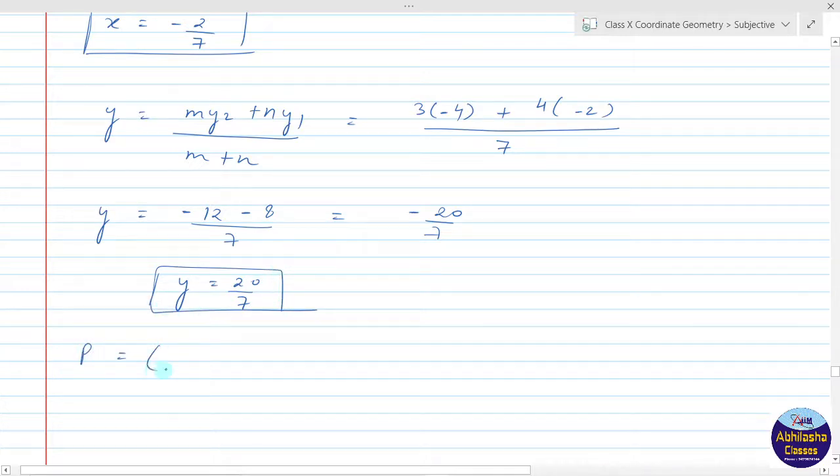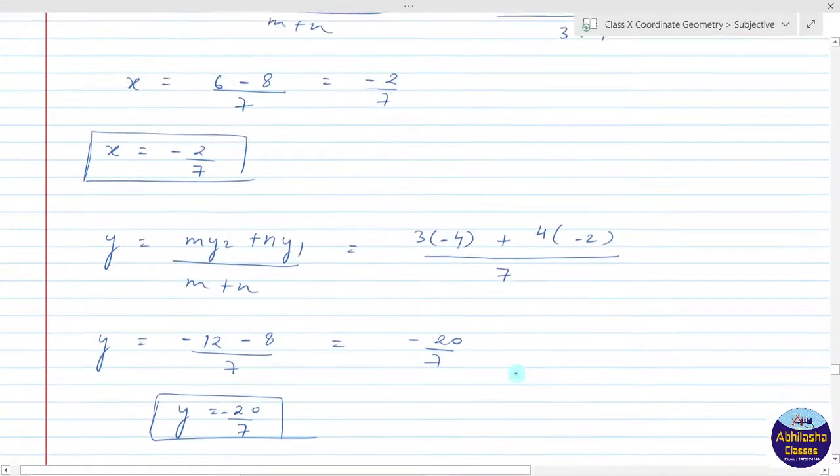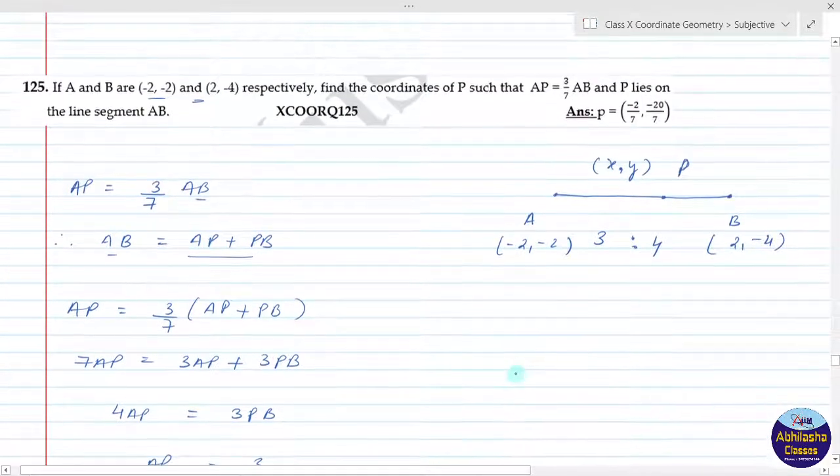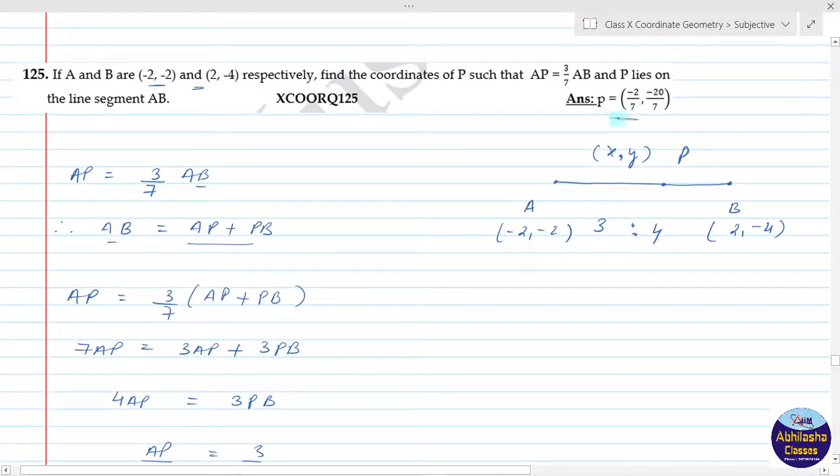So the coordinates of P are (-2/7, -20/7). This is the answer.